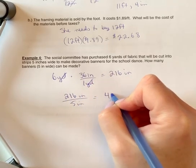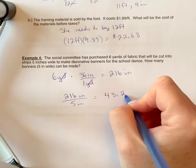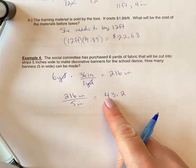And again, you can use your calculator. You're going to get 43.2. So that means how many banners can be cut?